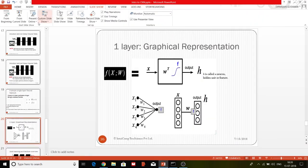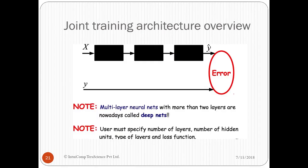Now, joint training architecture overview. Note, multi-layer neural nets with more than two layers are nowadays called deep nets. Next, user must specify number of layers, number of hidden units, type of layers and loss function.